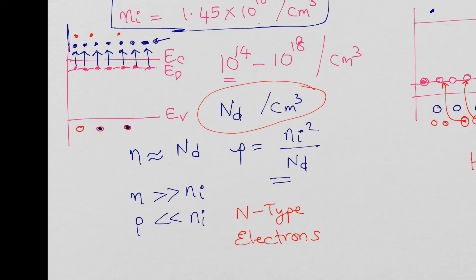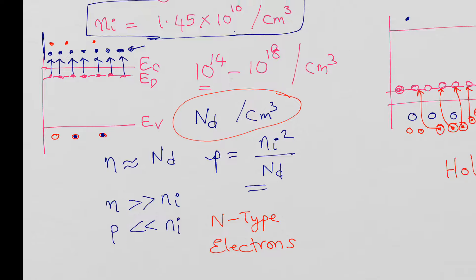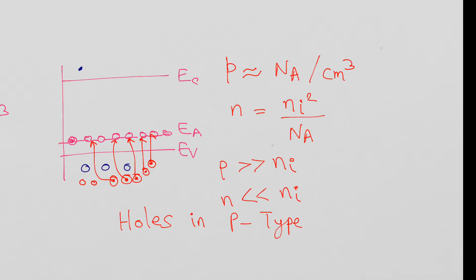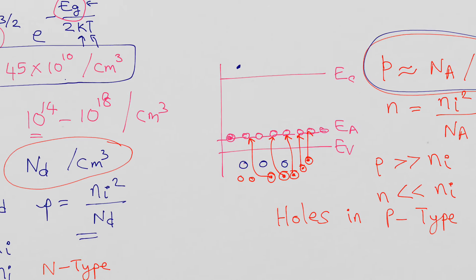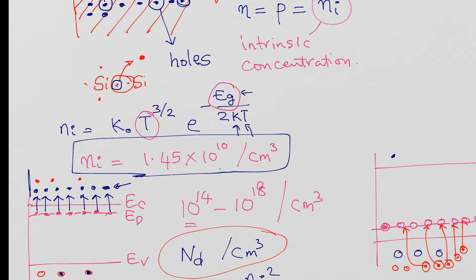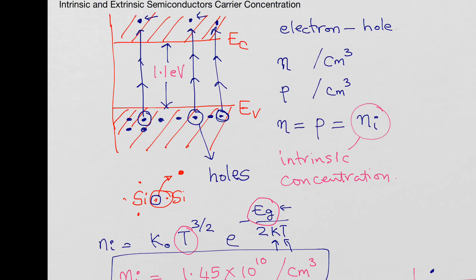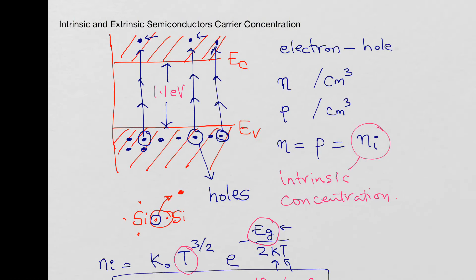The carrier concentration is dominated by the impurity addition: ND, the donor atoms per centimeter cube, in N-type, and NA, the acceptor atoms (boron) per centimeter cube, in P-type. This is how the carrier concentrations vary in intrinsic and extrinsic semiconductors.